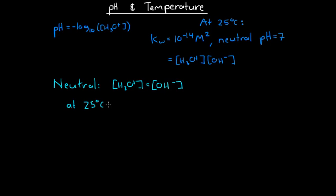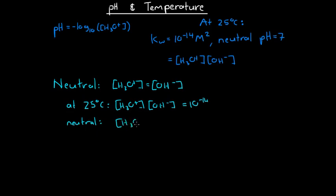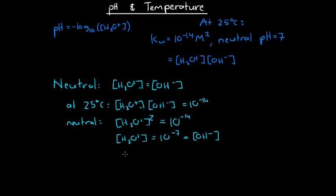the product of hydronium concentration and hydroxide concentration is equal to 10 to the negative 14. Because the concentration of hydronium equals the concentration of hydroxide in a neutral solution, we can say that the concentration of hydronium squared is equal to 10 to the negative 14. Therefore, the concentration of hydronium is equal to 10 to the negative 7. Substituting that into the pH equation, we see that pH is equal to 7 at 25 degrees Celsius for a neutral solution.